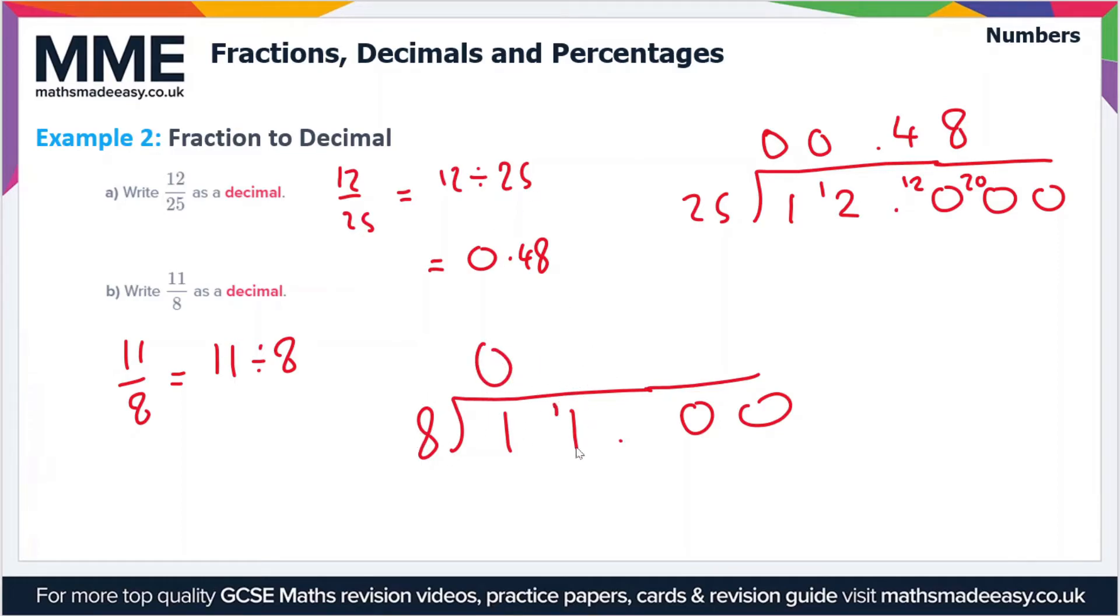First of all, how many times does 8 go into 1? The answer is 0, so we'll carry the 1. Then we have 11 here, so how many times does 8 go into 11? The answer is once and we get a remainder of 3. So how many times does 8 go into 30 this time? The answer is 3 times. Let me put my decimal point back in. So 3 times 8 is 24, that gives us a remainder of 6.